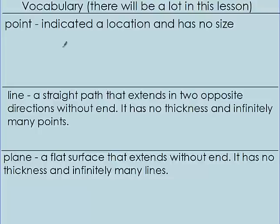So what's a point? The definition of a point is it's indicated by a location and has no size. So it'll look something like this — we usually draw a dot and we label this point A.